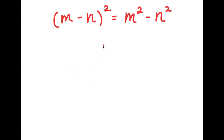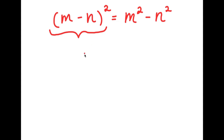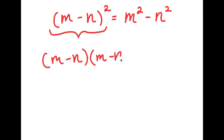In this problem, I have (m minus n) squared is equal to m squared minus n squared. To solve this, I'm going to start by rewriting m minus n squared as m minus n times m minus n.